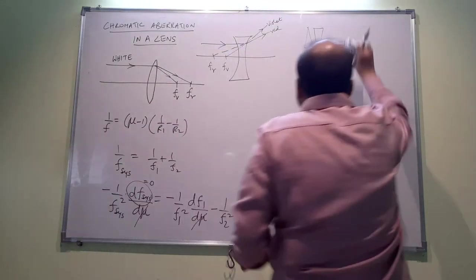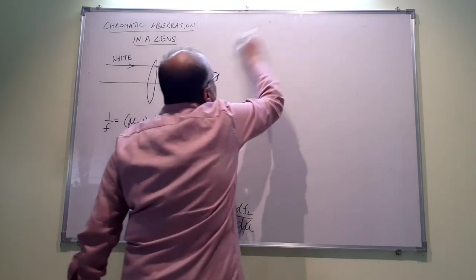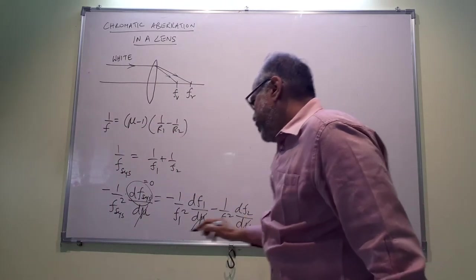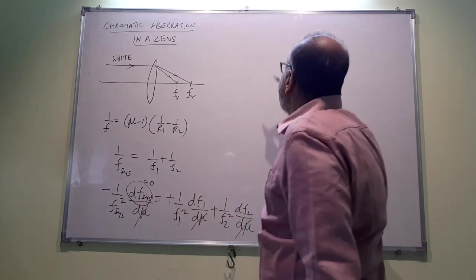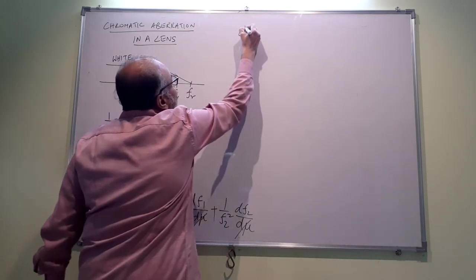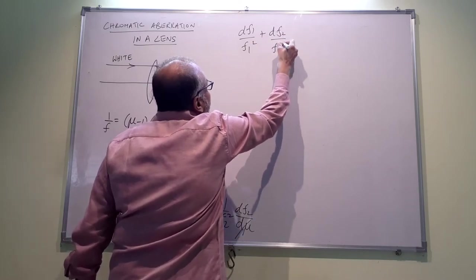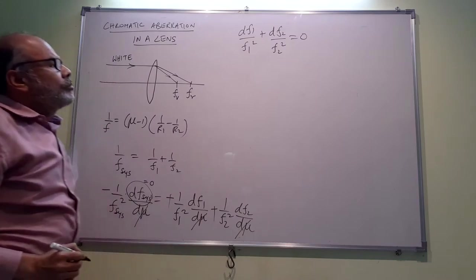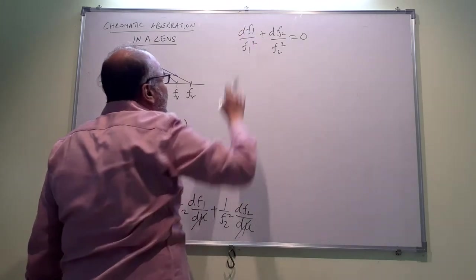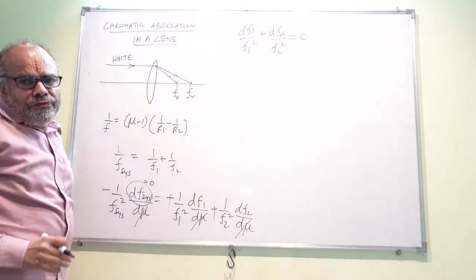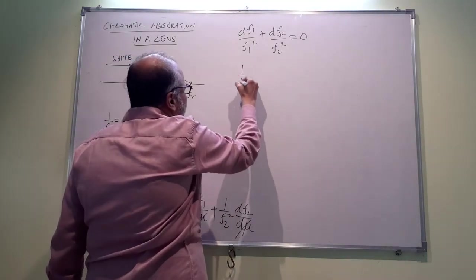So that's where we have basically, if you simplify this, this minus would go and you have basically df₁/f₁² + df₂/f₂² = 0. Now we wish to see what is this quantity df₁/f₁, whether it gives rise to some familiar quantity. Let us again get back to the lens maker's formula.